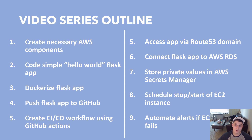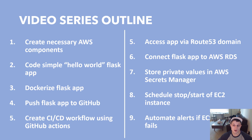We're going to access that app via a Route 53 domain. We'll connect the Flask app to AWS RDS, which is the Relational Database Service, so we're going to add a database on AWS and connect it to our Flask application. We're going to store private values in AWS Secrets Manager instead of using a .env file or environment variables. We're going to schedule stops and starts of our EC2 instance in case we don't want it running 24/7 to save on cost. And finally, we're going to automate alerts — so if the ECS instance fails and our application is no longer running, we'll get an email alert letting us know immediately instead of waiting for consumers to tell us it's not working.